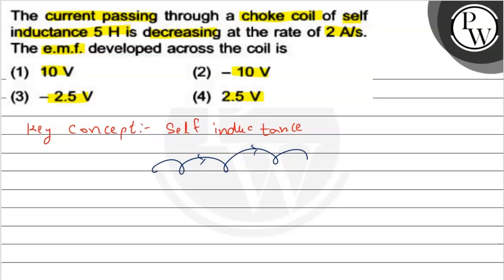Question में हमें दिया है, एक चोक coil है, जिसका self inductance L is equal to 5 H है, और इसमें decreasing current flow कर रहा है, at the rate of di by dt is equal to 2 ampere per second. हमें इस coil में developed EMF की value find करना है.